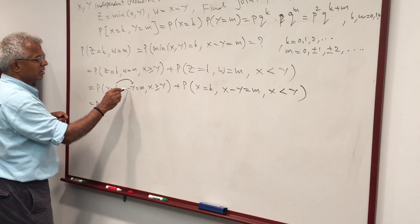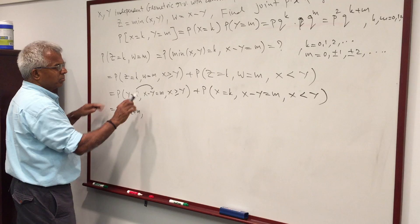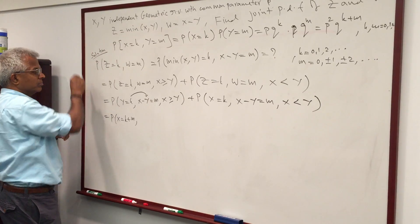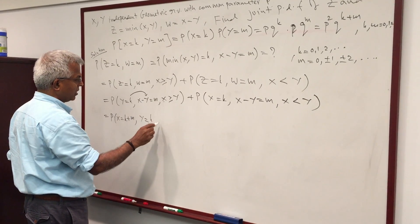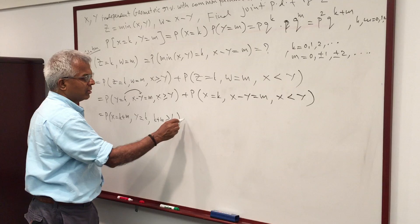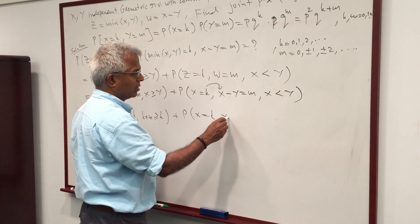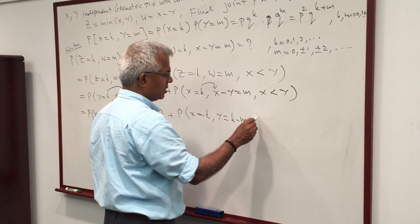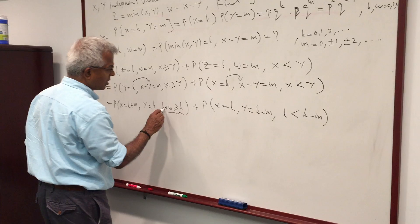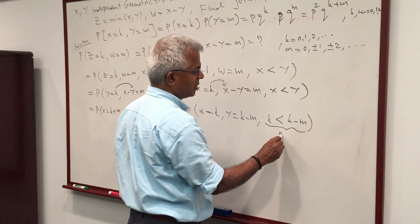Now let's substitute the values. Notice that Y is K, so X will be K plus M. The first term becomes P(X=K+M, Y=K) with the condition that K+M is greater than or equal to K. The second term becomes P(X=K, Y=K−M) with the condition that K is less than K−M. The first condition is equivalent to M being positive, and the second is equivalent to M being strictly negative.